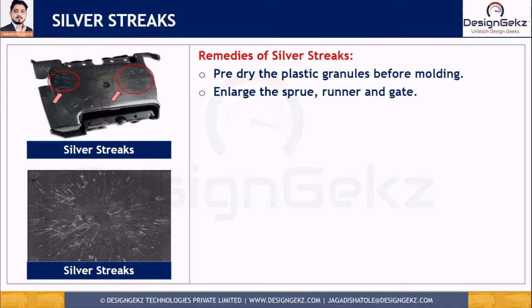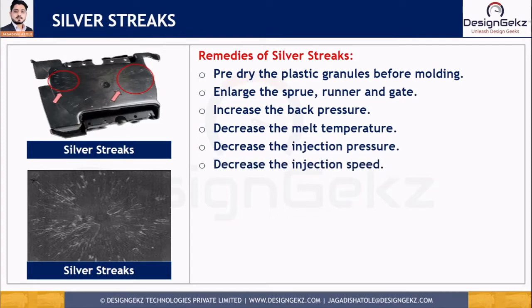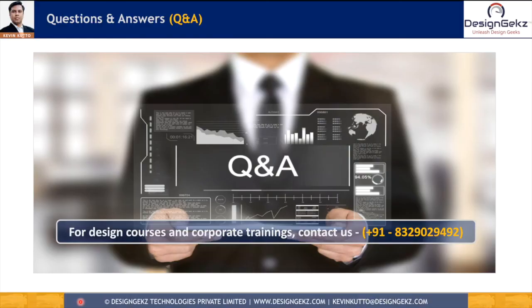By altering molding conditions and parameters — such as increasing back pressure, decreasing melt temperature, decreasing injection pressure, and decreasing injection speed — we can mitigate splay marks or silver streaks on the part. This defect is largely addressed at the mold operator or mold maintenance level.